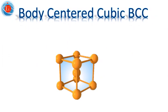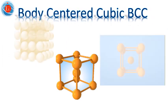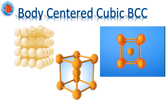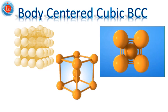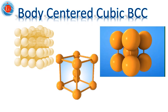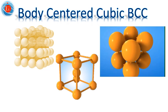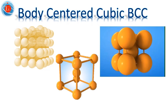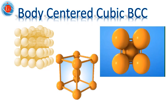The body-centred cubic unit cell has atoms at each of the eight corners of the cube, plus one atom in the centre of the cube. Each of the corner atoms is the corner of another cube, so the corner atoms are shared among eight unit cells in the crystal. When the metal is deformed, the planes of atoms must slip over each other; however, the BCC structure is highly resistant to such deformation. This is why metals with BCC structure are usually harder and less malleable than metals with FCC structure.